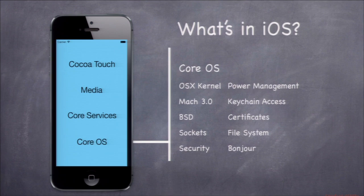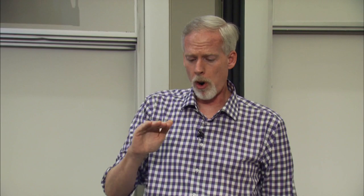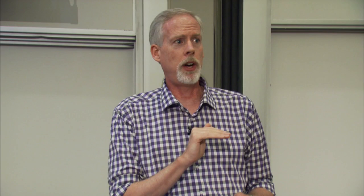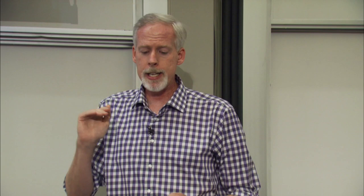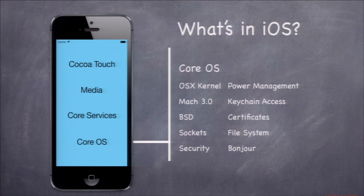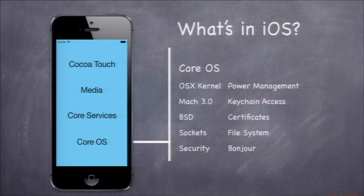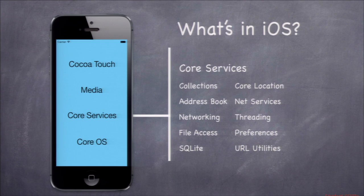At the Core OS layer, near the hardware, is a Unix kernel. This is a Unix operating system — BSD-based, Mach — so you get everything that comes with Unix: sockets, file system permissions, plus stuff specific to a mobile device like power management, keychain access for security, and Bonjour for finding other things on the network. It's a very powerful underlying operating system, but most of that API is in C.